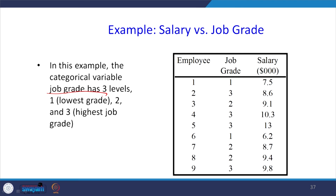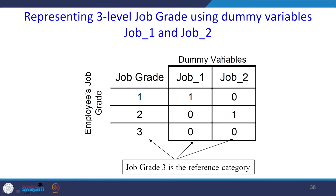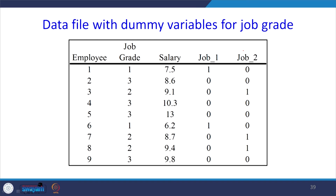For three job grade levels, the coding is: Job 1 → (1, 0), Job 2 → (0, 1), Job 3 → (0, 0). The combination (0, 0) is taken as the reference category. So presence of (1, 0) explains category 1, (0, 1) explains category 2, and (0, 0) explains category 3. There are three levels but only two dummy variables: Dummy Variable 1 and Dummy Variable 2. This new dataset with two dummies can then be used for regression analysis.